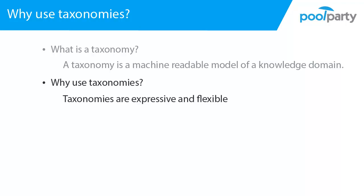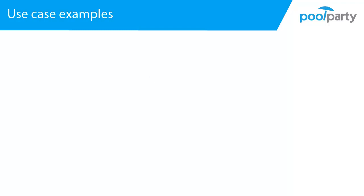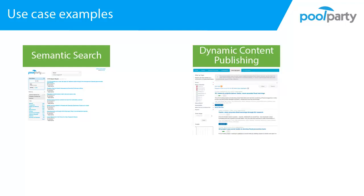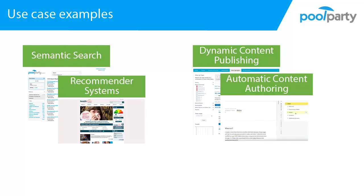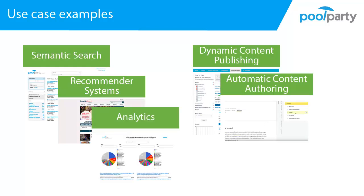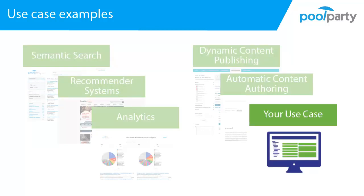Taxonomies are very expressive and flexible knowledge models — expressive enough to model very complex information, and flexible enough to grow with your needs. You can start out with a very simple taxonomy with just a hierarchical structure, and proceed to increase your taxonomy's expressiveness as requirements for modeling more complex information grow. Let's take a look at some use cases — a few examples of typical uses of taxonomies in an enterprise environment. There are many more ways in which taxonomies can be leveraged to help overcome business challenges.